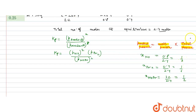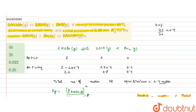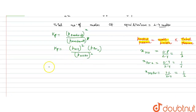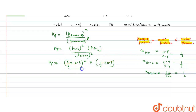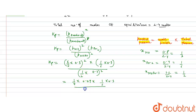Substituting into Kp: P_NO = (1/3) × 0.3, P_Br₂ = (1/6) × 0.3, P_NOBr = (1/2) × 0.3. So Kp = [(1/3 × 0.3)² × (1/6 × 0.3)] / (1/2 × 0.3)². The 0.3² terms in numerator and denominator cancel out partially, simplifying the expression.